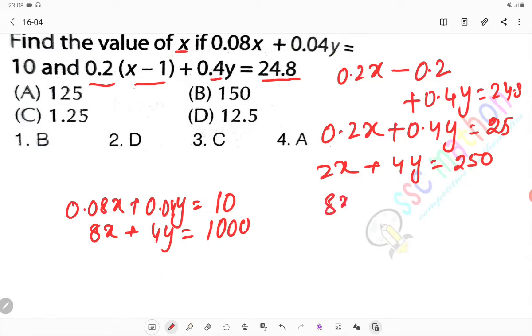So 8x plus 4y equal to 1000. In the second equation, we have 0.2(x - 1) + 0.4y = 24.8. We need to solve these equations together.